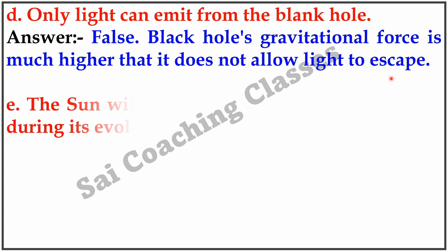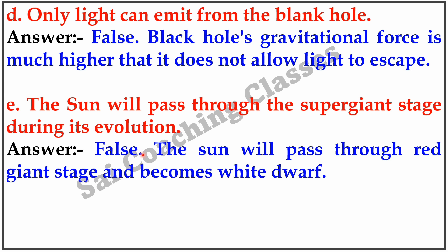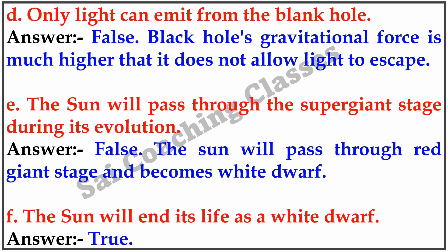E. The sun will pass through the supergiant stage during its evolution. Answer: False. The sun will pass through red giant stage and become white dwarf. F. The sun will end its life as a white dwarf. Answer: True.